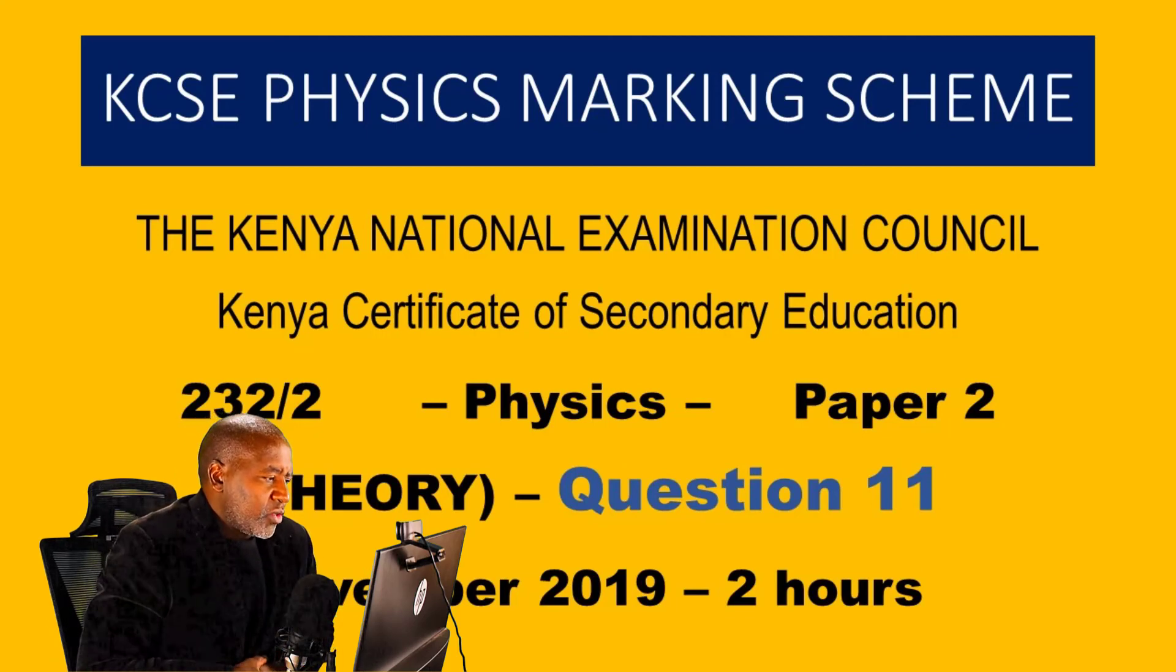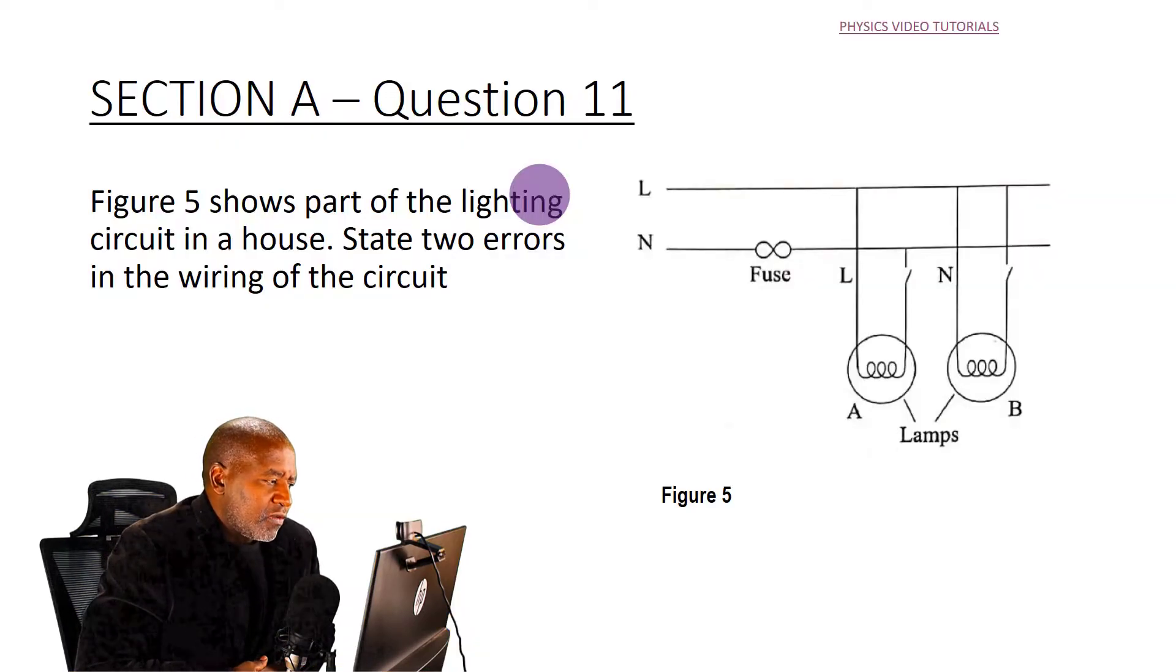In question 11, we are told that Figure 5 shows part of the lighting circuit in a house. State two errors in the wiring of the circuit.